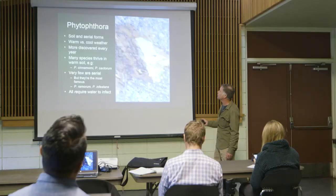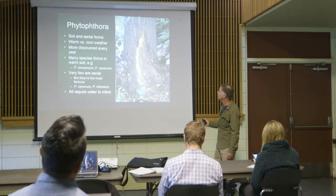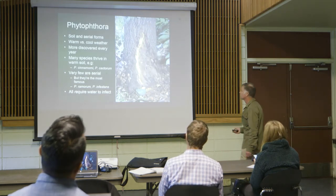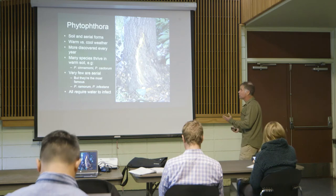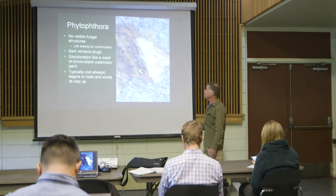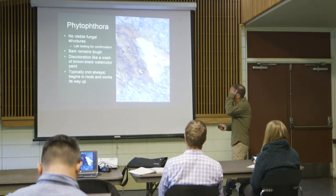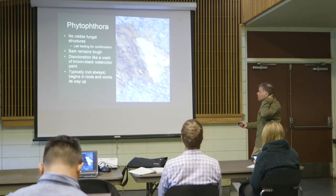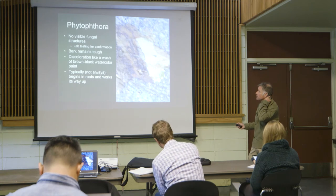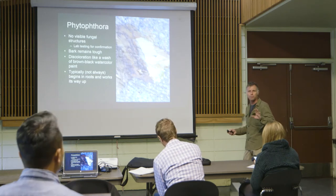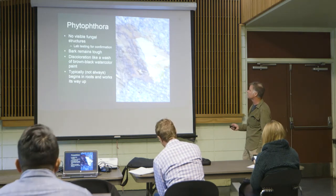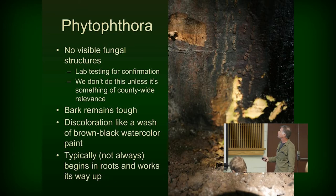The prognosis for something with a small lesion is different than when half the tree is gone. Even if we had things we could treat with — and Phytophthora is at least treatable — there are no visible fungal structures, so you need lab testing. The discoloration often isn't as dark and stark as shown here; it may just look like a thin wash of watercolor paints over it. On this walnut it's progressing very slowly — probably only made an inch of progress this year.